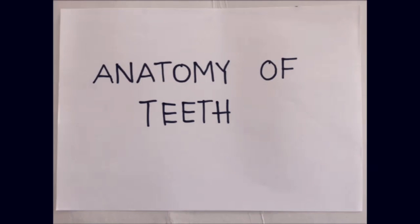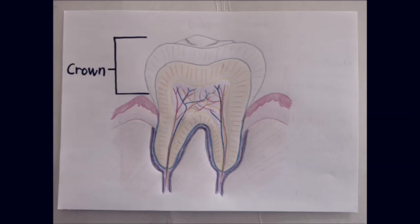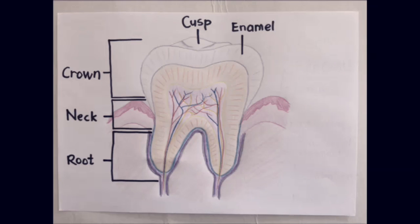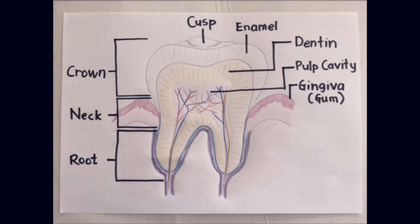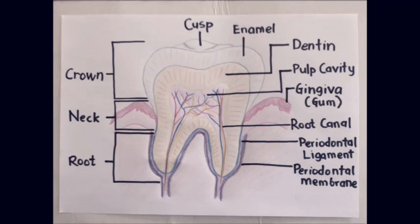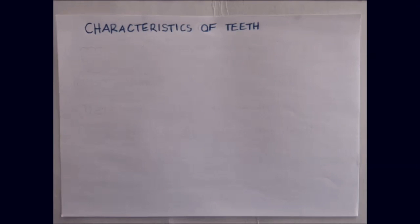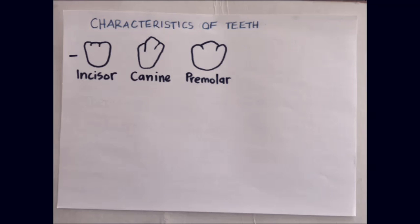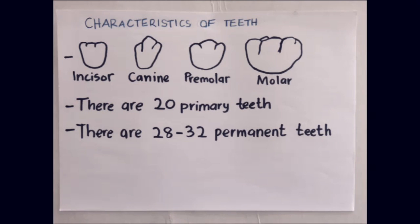The anatomy of teeth includes structures such as the pulp chamber, dentin, and periodontal ligament and periodontal membrane. The characteristics of teeth: there are four types — incisor, canine, premolar, and molar. There are 20 primary teeth and 32 permanent teeth.